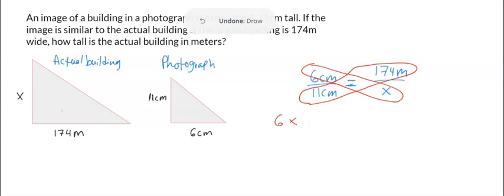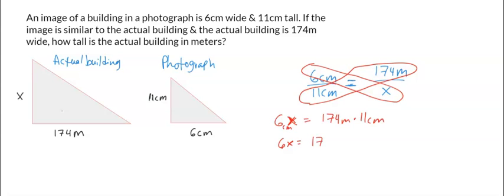Equals 174 meters times 11 centimeters. So just think of it like that: 6X equals 174 times 11. So when you get 174 times 11...